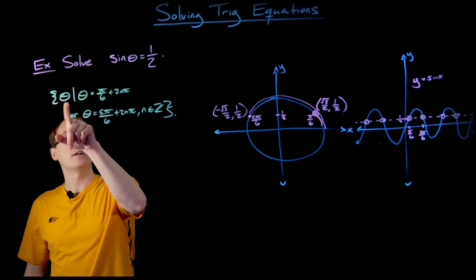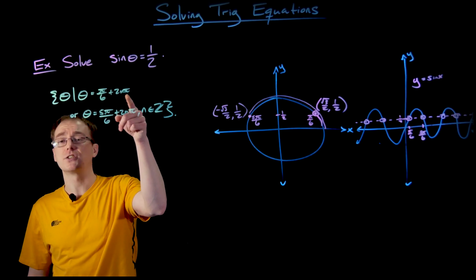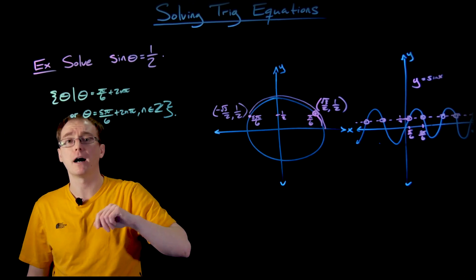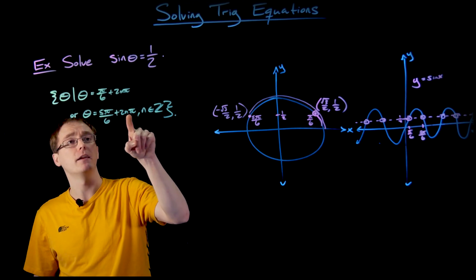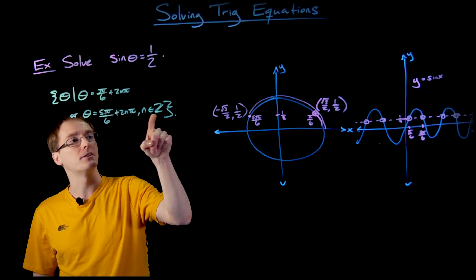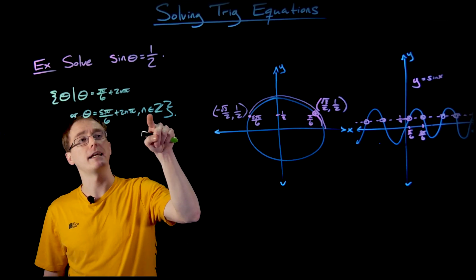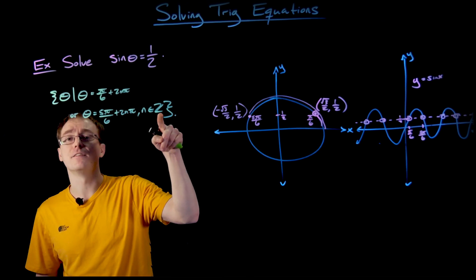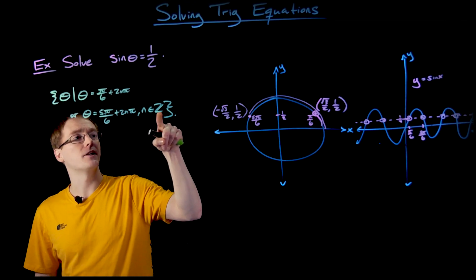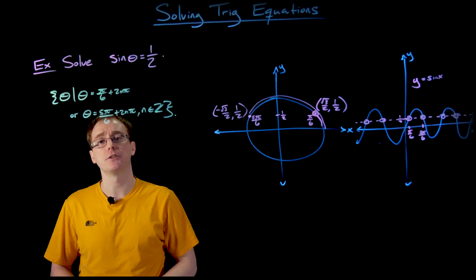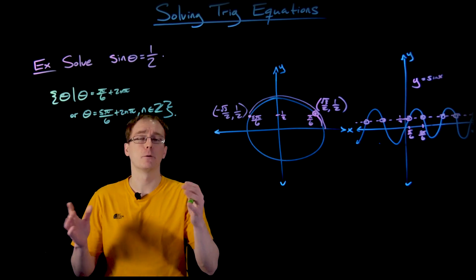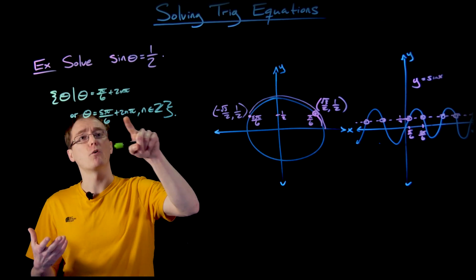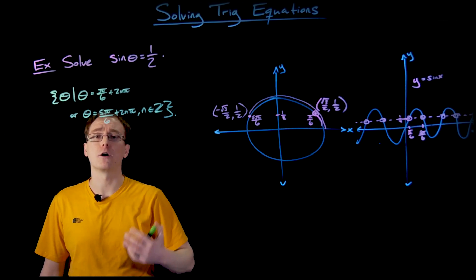We are looking at the set of angles theta such that theta equals π/6 + 2nπ, or theta equals 5π/6 + 2nπ, where n is an element of the set of integers. The lowercase epsilon symbol indicates that something is an element of another set, and the capital blackboard Z is the common notation for the set of integers — I think it comes from the German word for counting or numbers. So n must be an integer or a whole number for this formula to work.